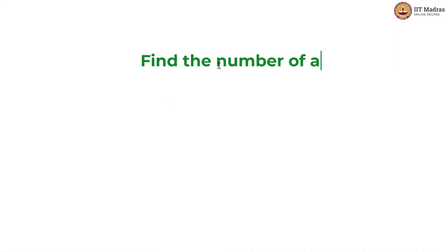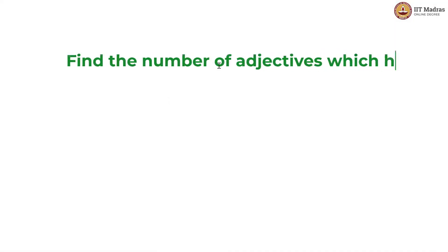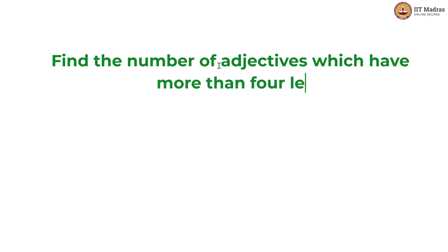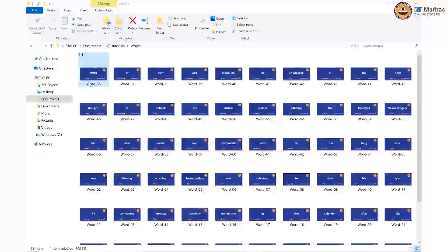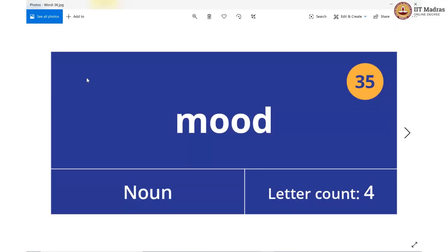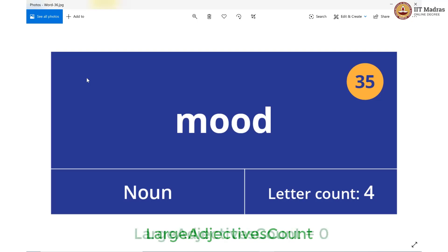Let us try to pick out the number of adjectives which have more than 4 letters, so 5 or above. We will again iterate, going card by card. This is our first card and before we start, we should declare our variable which is large adjectives count, initialized to 0. We will increment it every time we come across an adjective whose letter count is greater than 4.